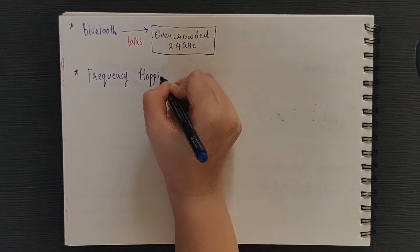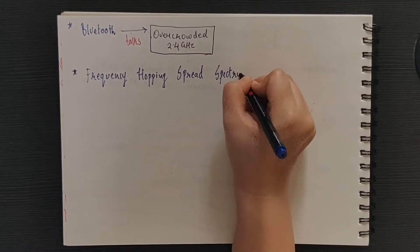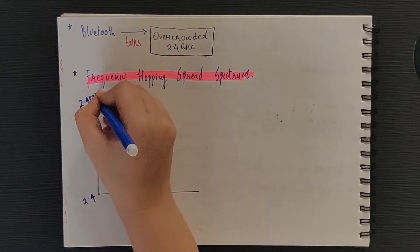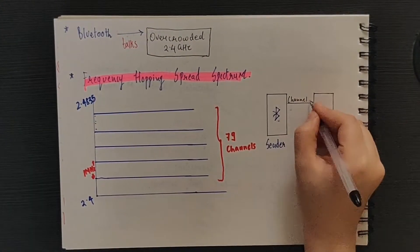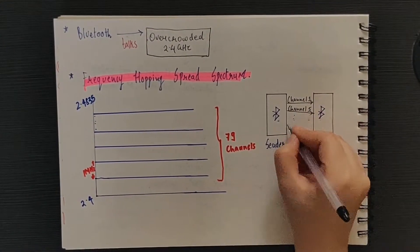Bluetooth divides the 2.4 to 2.4835 gigahertz band into 79 channels, where the width of each channel is 1 megahertz. The Bluetooth devices never ever stay on the same channel.